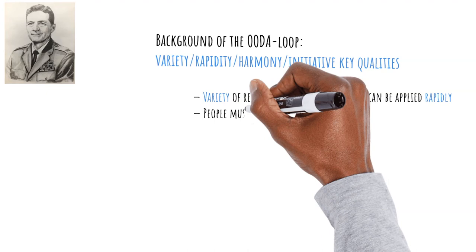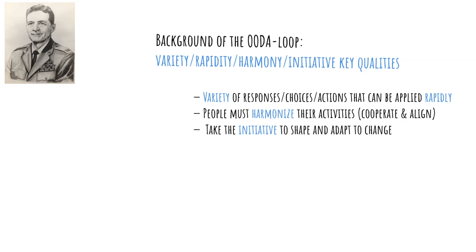Variety refers to the number of alternative options that are available for an action or a decision, or for collecting data for observation. It can also refer to the variety of skills, previous experiences, and insights that are working together — in short, diversity. Rapidity is the speed at which one can go through an OODA loop, and also how this speed can be adapted to the situation. Harmony is a combination of the ability of people to work closely together, to align their activities and to support and learn from each other.